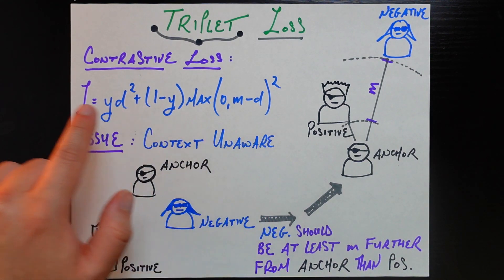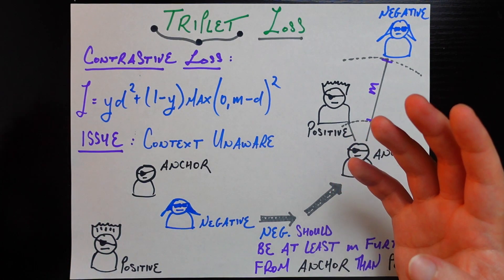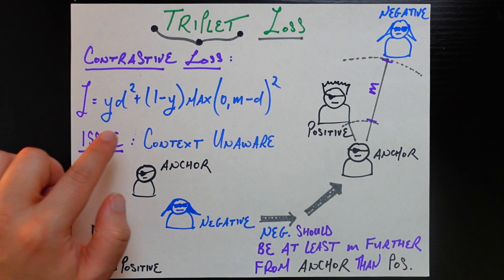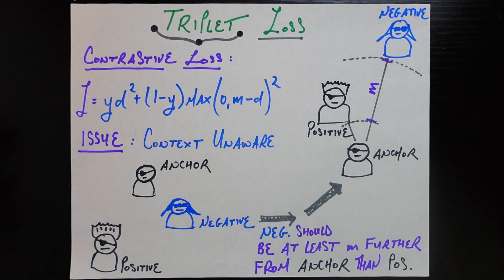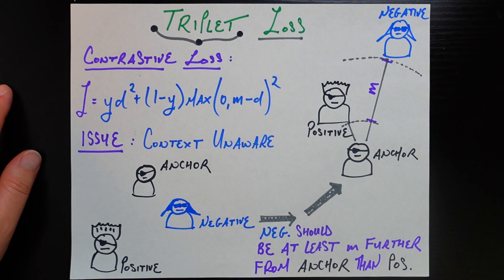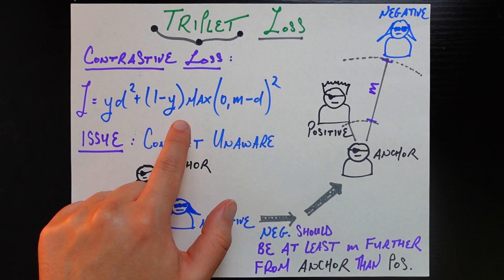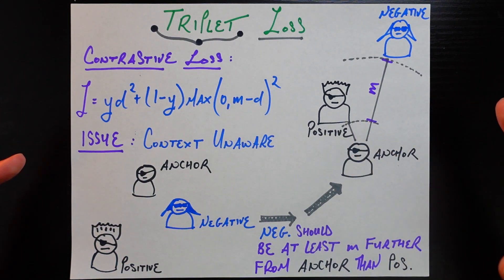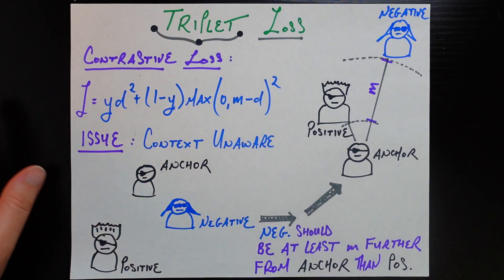As a recap: contrastive loss uses a binary variable y indicating if two pictures are the same person. If y equals one, the loss is simply the squared distance between the embeddings — we want to decrease that distance since they're from the same person. If y equals zero, the embeddings are from different people, and we prioritize those distances being far apart up to some margin m. If they're further than that margin, we don't care, as long as they're at least m distance apart.